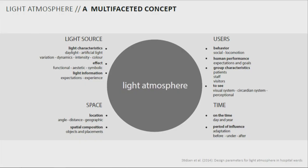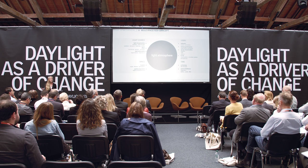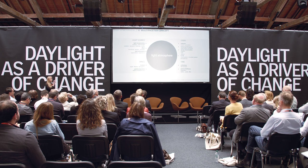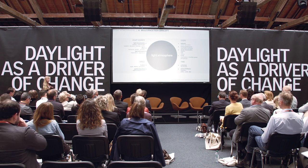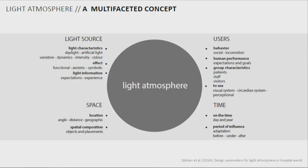Lone Stiesen has been working with a light atmosphere model, trying to unfold the different parameters that affect the way we perceive the lighting of a space. In her view, several factors — the users, the time, the space, as well as the light source — all affect our perception of the space.